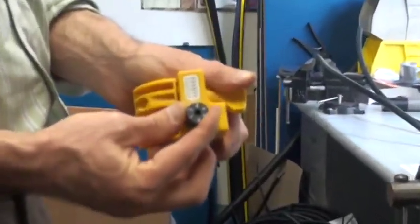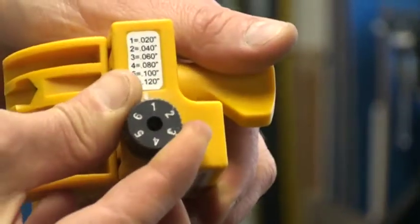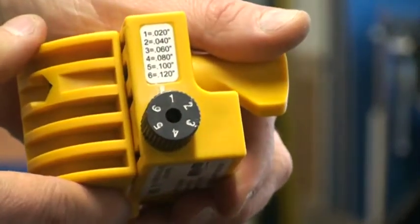Set the blade depth to its lowest setting, setting number 1, by turning the dial.